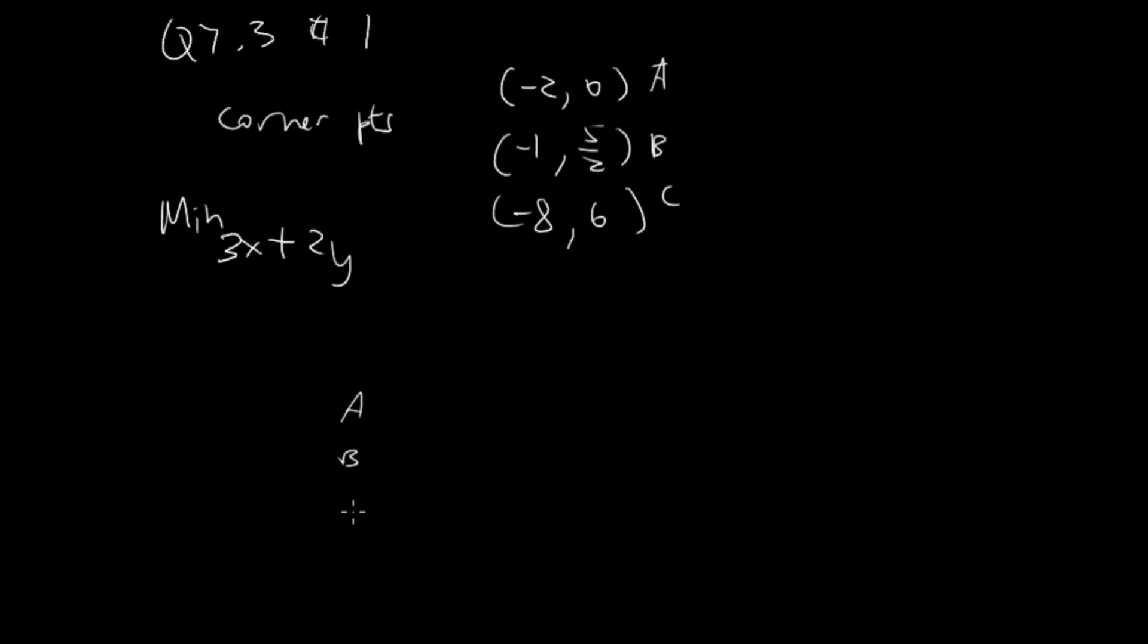We will plug each point into the objective function. Point A is (-2, 0), so -2 times 3 is -6.